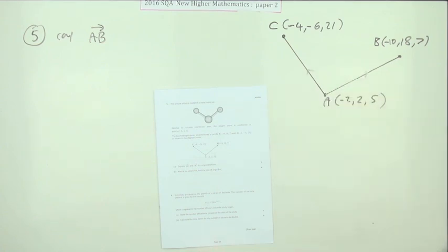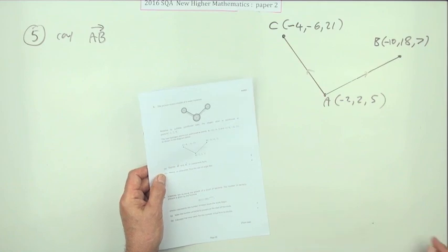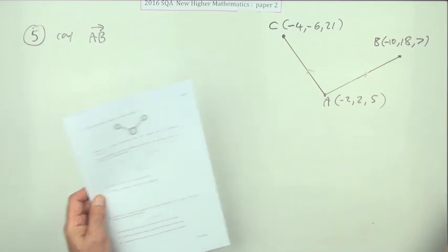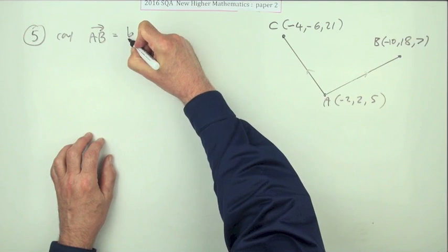I should really say there's the two vectors. Well, part a: express AB and AC in component form. Well, AB will be b minus a.